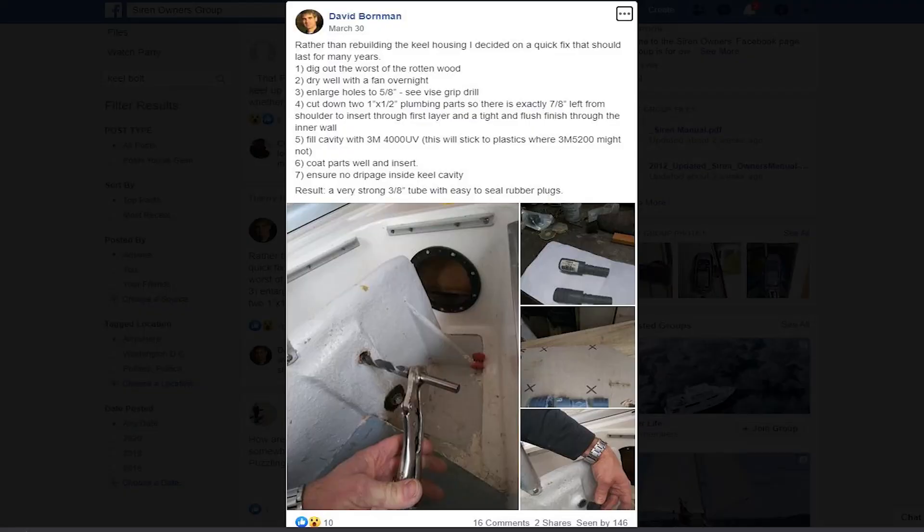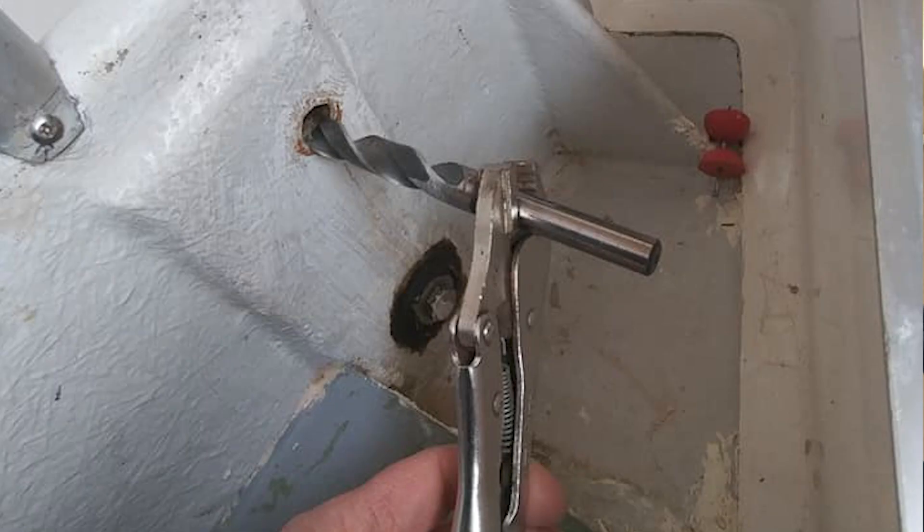David's system starts by enlarging the existing keel pin hole using a 5/8" bit with a small plier. I would advise you get a very sharp brand new bit if possible. It's a pretty easy operation, but you want a nice hole made and make sure both holes on each side are lining up.